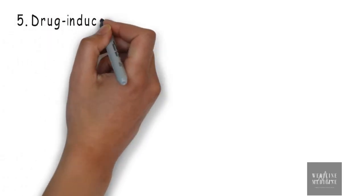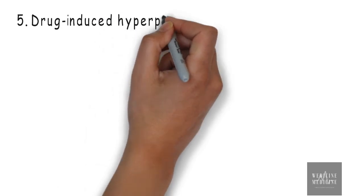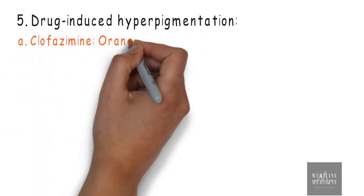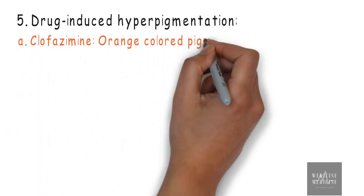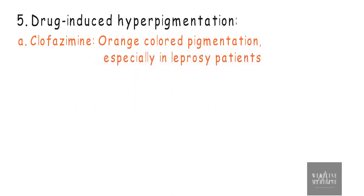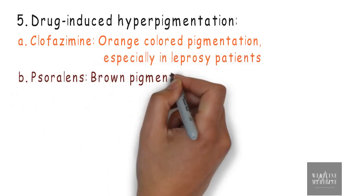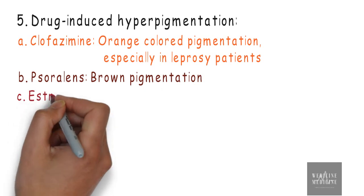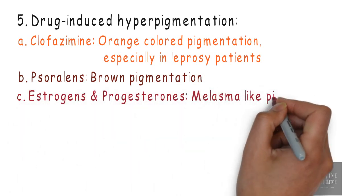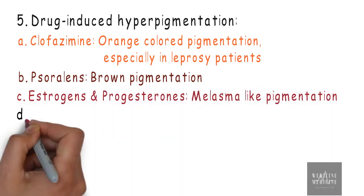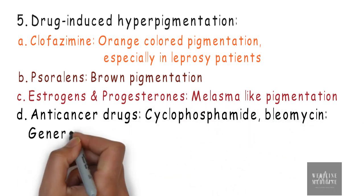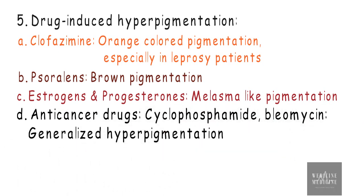Drug-induced hyperpigmentation can be caused by drugs such as clofazamine, leading to orange color pigmentation especially in leprosy patients, or psoralens causing brown pigmentation. Estrogens and progesterones can cause melasma-like pigmentation, and anti-cancer drugs such as cyclophosphamide or bleomycin can lead to generalized pigmentation.